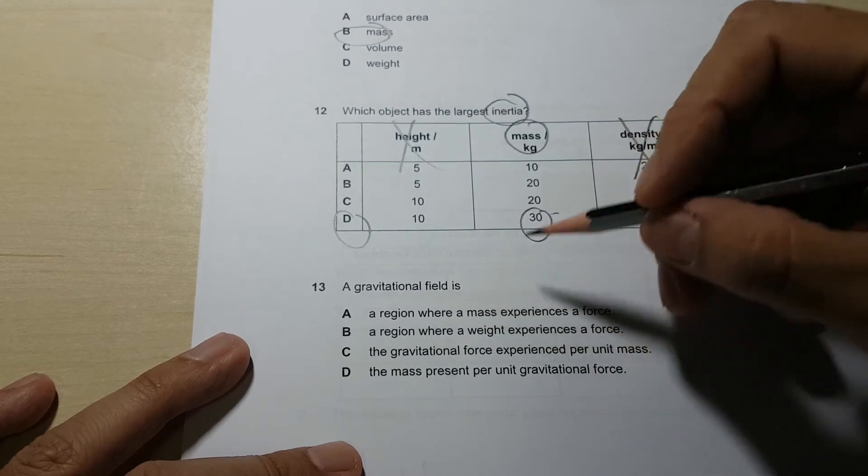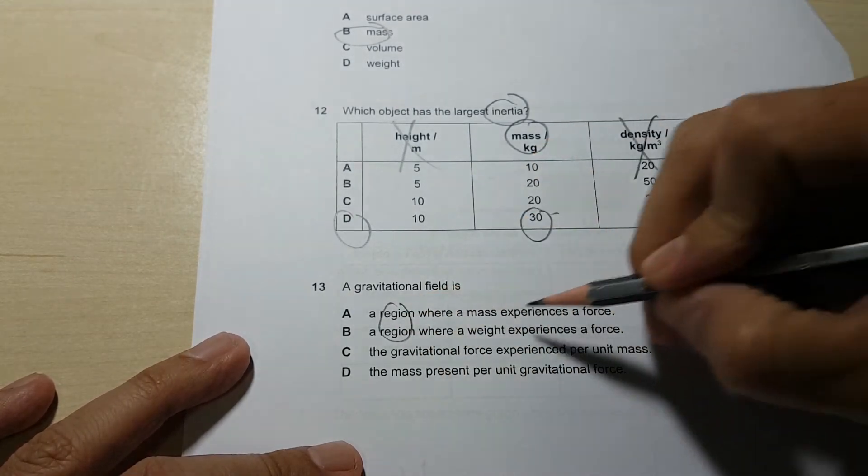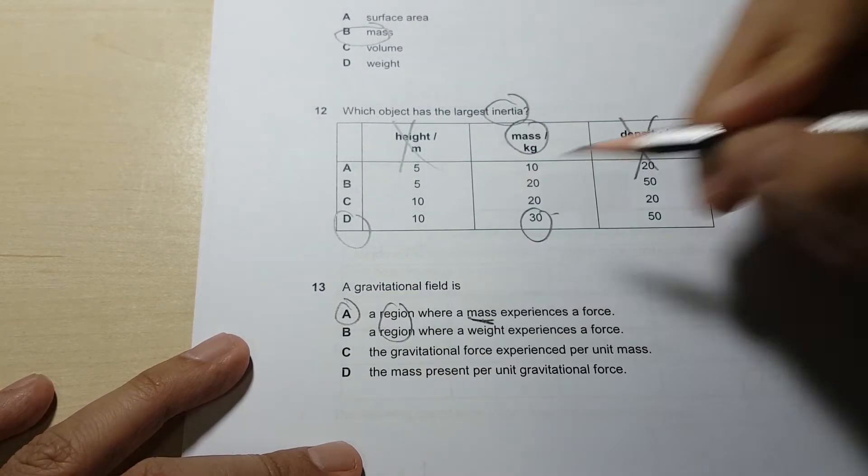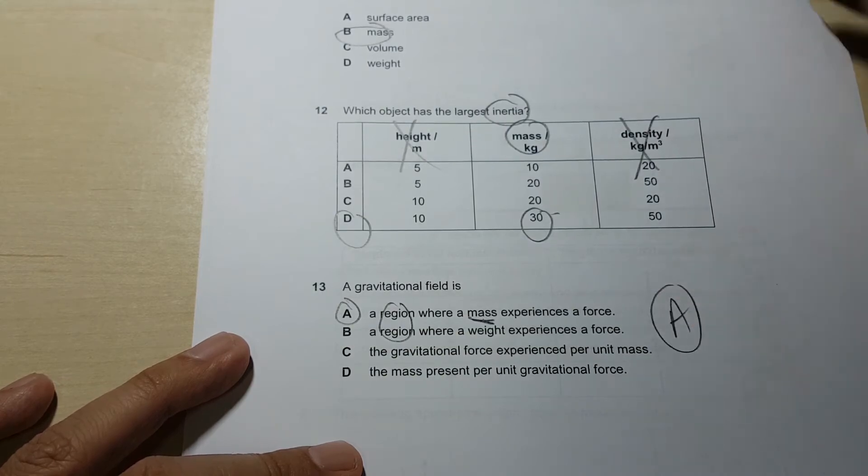Gravitational field is basically a region where mass experiences a force. This is your definition.